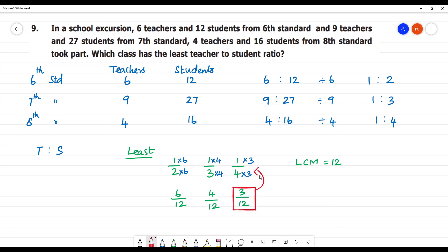3 by 12 is where it belongs. 3 by 12 is 1 is to 4. So, 1 is to 4 is the 8th standard. 8th standard has the least.